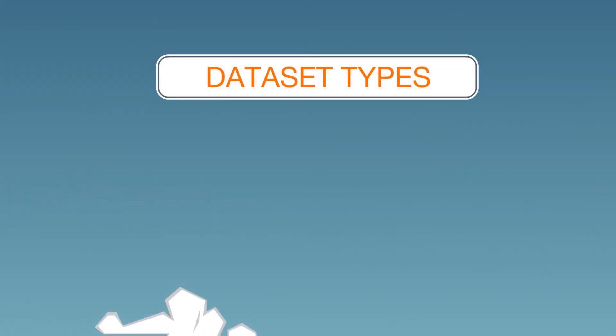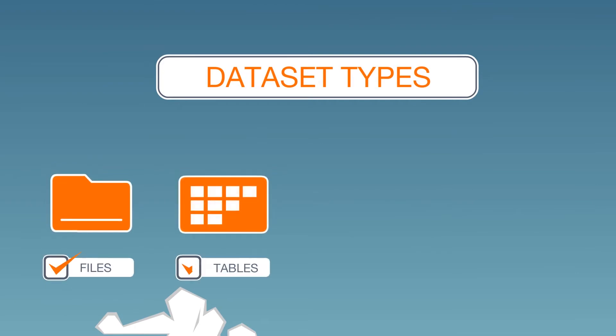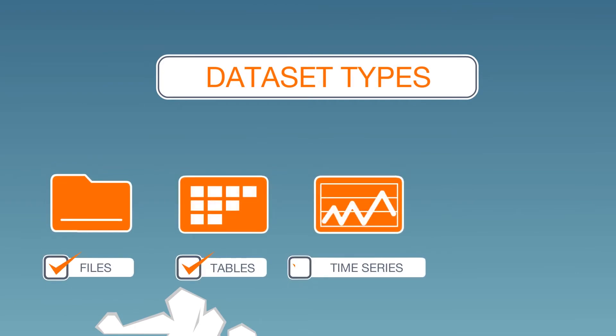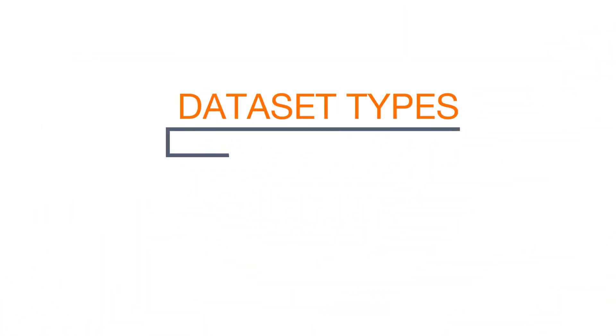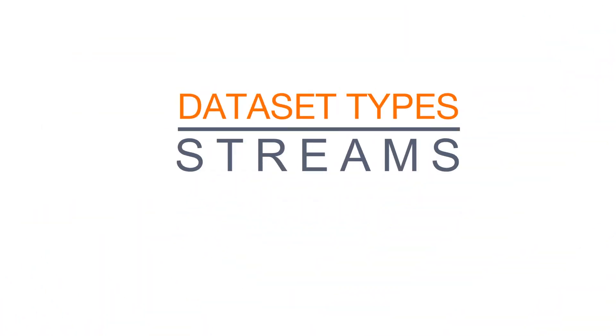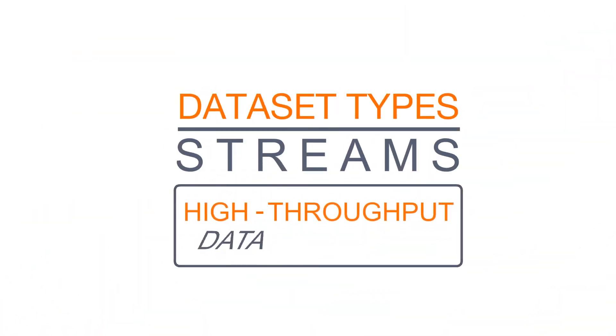Data set types include files, tables, time series, and OLAP cubes. A special type called streams can be used for high-throughput data ingestion.